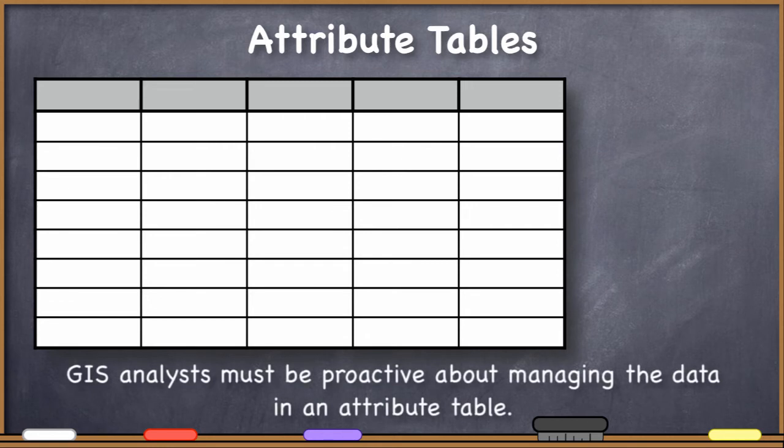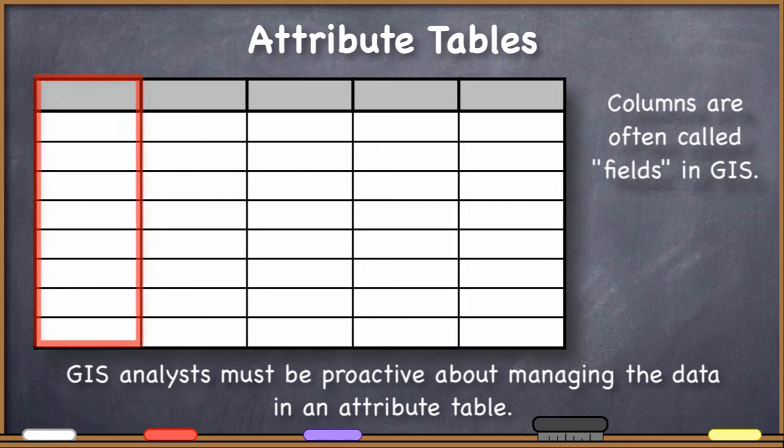When you're working with an attribute table, you have to be proactive in thinking about what data you're going to need to store and how it should be stored. This is what trips people up when they don't think about what data they will want to store in a particular column or field, as columns are called in GIS, in advance.